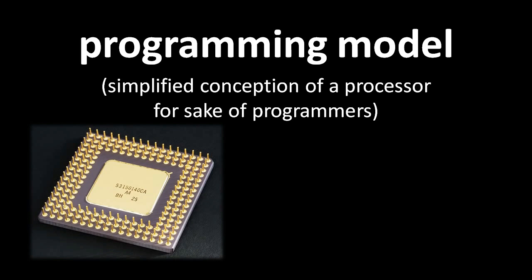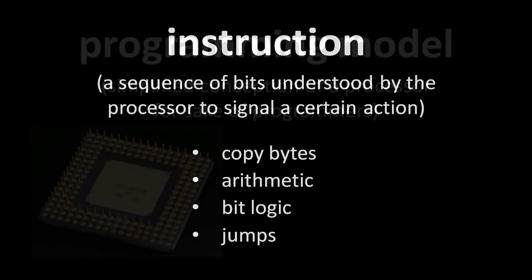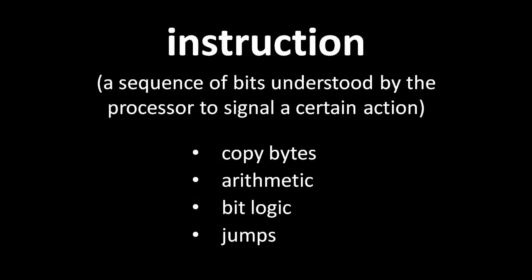What a CPU does from the programmer's perspective is execute binary instructions, which are sequences of bits typically around 8 bits in size on the low end and around 256 bytes in size on the high end, with most somewhere in between. The way to think of these instructions is that the CPU is hardwired to read one instruction after another and hardwired to act upon each instruction differently. For example, if the binary sequence 10110011 denotes the start of an addition instruction, the CPU is hardwired to perform an addition operation when it reads an instruction starting with that sequence.